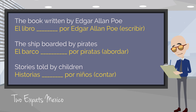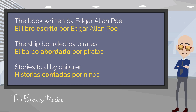Now it's your turn to practice. There are three English phrases on the screen and a partial translation below. You just have to take the verb in parentheses and change it into the past participle. Remember, these are becoming adjectives, so they have to agree in number and gender with the noun. Here are the answers. The book written by Edgar Allan Poe — el libro escrito por Edgar Allan Poe. Escrito is masculine singular because el libro is masculine singular. Number two: The ship boarded by pirates — el barco abordado por piratas. And our third: Stories told by children — historias contadas por niños. It's contadas — feminine plural — because it's describing historias, which is feminine plural.